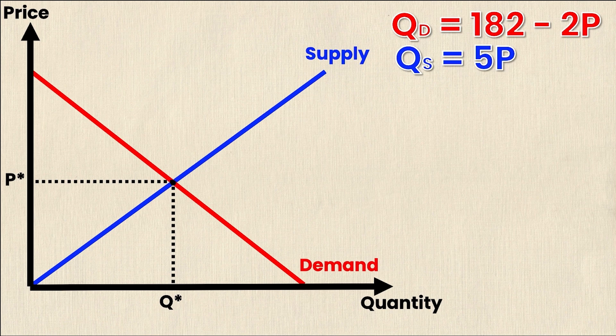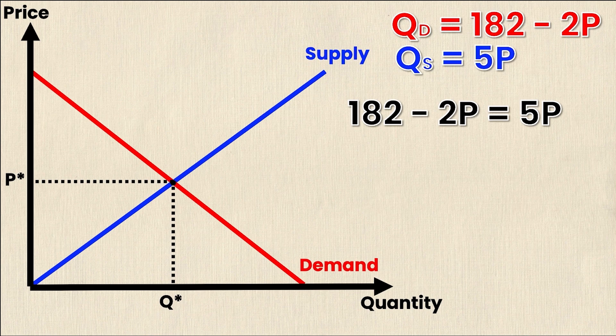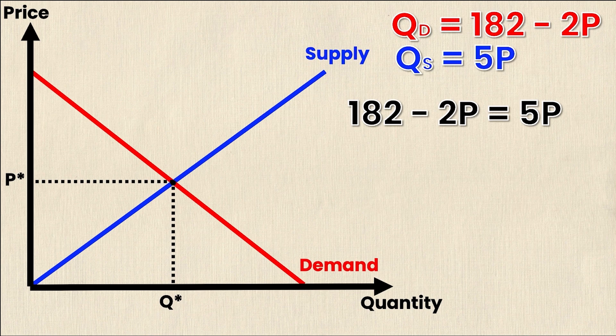So we know where the supply curve and the demand curve intersect is at one point where the Q values and the P values must be the same for both of them. So what I can do to find equilibrium is simply set quantity demanded equal to quantity supplied and what that's going to look like is me setting the equations equal to each other because quantity demanded is equal to 182 minus 2P and quantity supplied is equal to 5P. So if I set them equal to each other I get something like this.